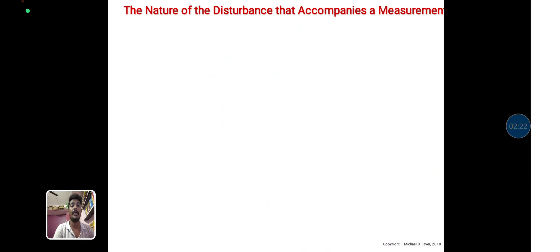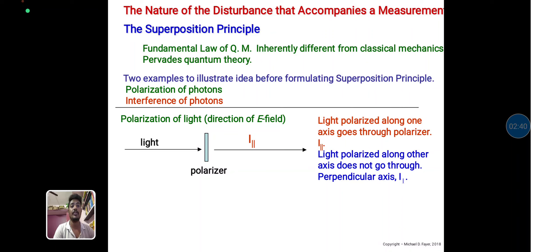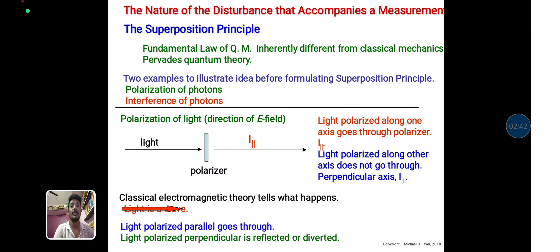Next is the superposition principle — the fundamental example distinguishing quantum mechanics from classical mechanics. This involves the polarization of photons and interference of photons. When light falls onto a polarization sample, it is divided at different angles. Light polarized along one axis goes through the polarizer, while light polarized along a perpendicular axis does not. Under classical electromagnetic theory, light polarized parallel goes through and light polarized perpendicular is reflected or diverted. This is the major example for the superposition principle, first explained from the quantum mechanics concept.